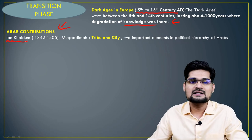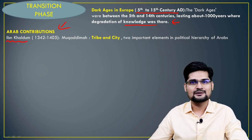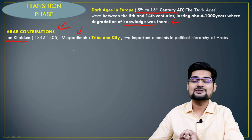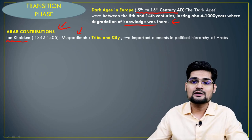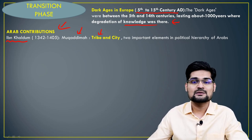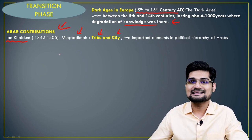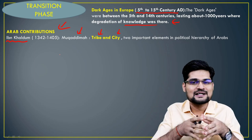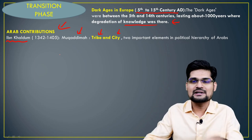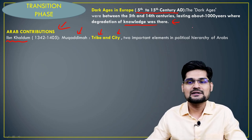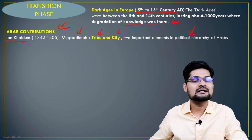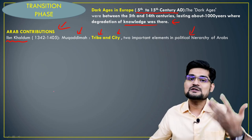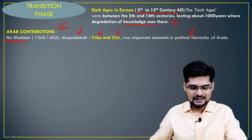Scholars like Ibn Khaldun wrote the book Muqaddimah, in which he talked about two major things: the tribe and the city — people and city again — the two major components in his elemental work on the political hierarchy of Arabs. Political geography thus survived through Arab scholarship during this transitional period.